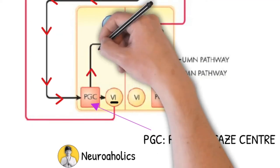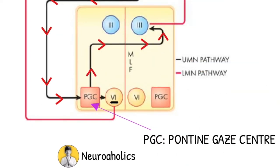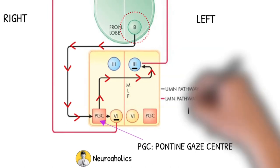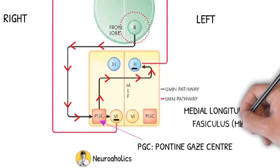From the right pontine gaze center nerves also pass to the opposite 3rd nerve nuclei. In this case this will be the left 3rd nerve nuclei. All the cranial nerve nuclei are connected with each other through the medial longitudinal fasciculus or medial longitudinal bundle.